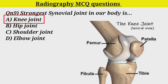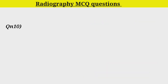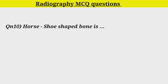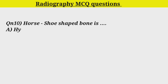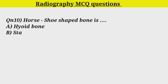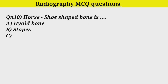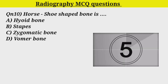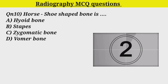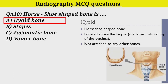Q10. What shape is the hyoid bone? Option A. Hyoid bone. Option B. Straps. Option C. Zygomatic bone. Option D. Humour bone. Correct answer is hyoid bone — it is a horseshoe-shaped bone.